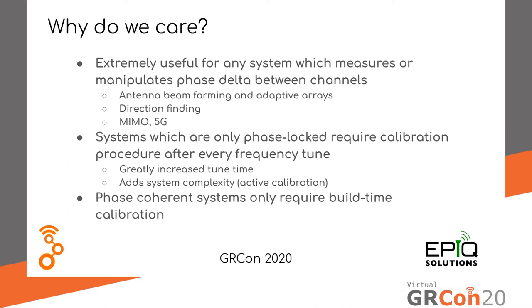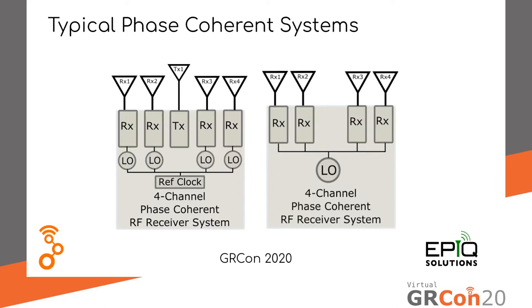With a phase coherent system, you really only need to calibrate it when you build it and you can just go from there. This is a typical phase coherent system, the way it's generally distributed. On the left-hand side you can see a TX signal: there are four independent LOs, and you don't know where the phase relationship between the LOs is, so you need a calibration signal to be transmitted out of the TX channel and into all four RX channels to figure out where they're at. Apply the CAL factors, and now you're ready to start receiving. This greatly increases the tune time when going from frequency A to frequency B.